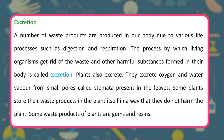Excretion: various waste products are produced in the body due to life processes such as digestion and respiration. The process by which living organisms rid themselves of waste and harmful substances is called excretion. Plants also excrete — they release oxygen and water vapor through stomata in leaves. Some plants store waste products like gums and resins within themselves in a harmless way.